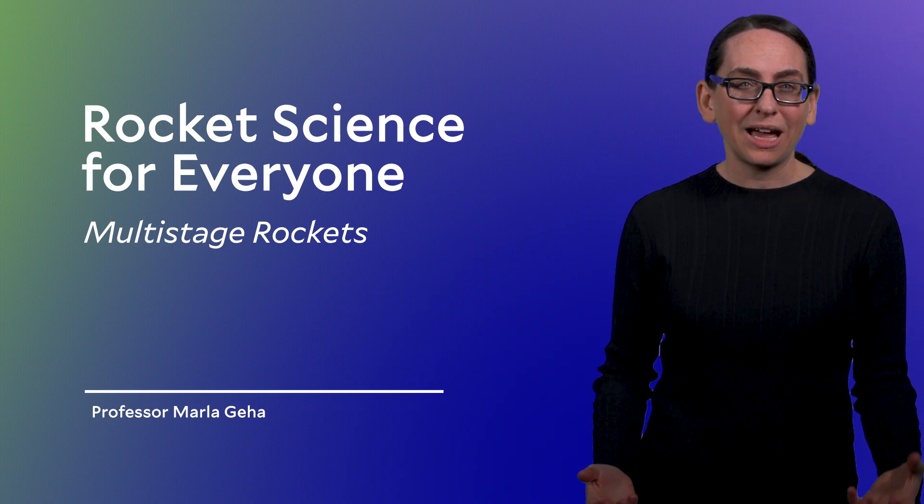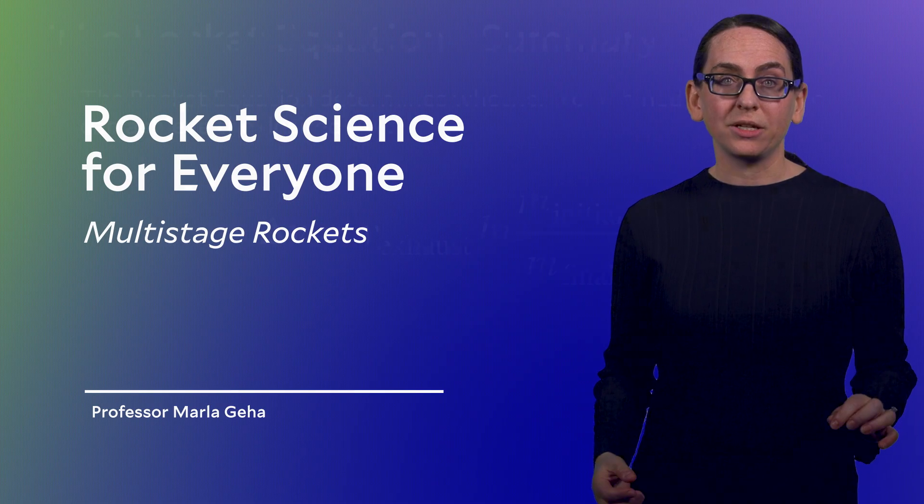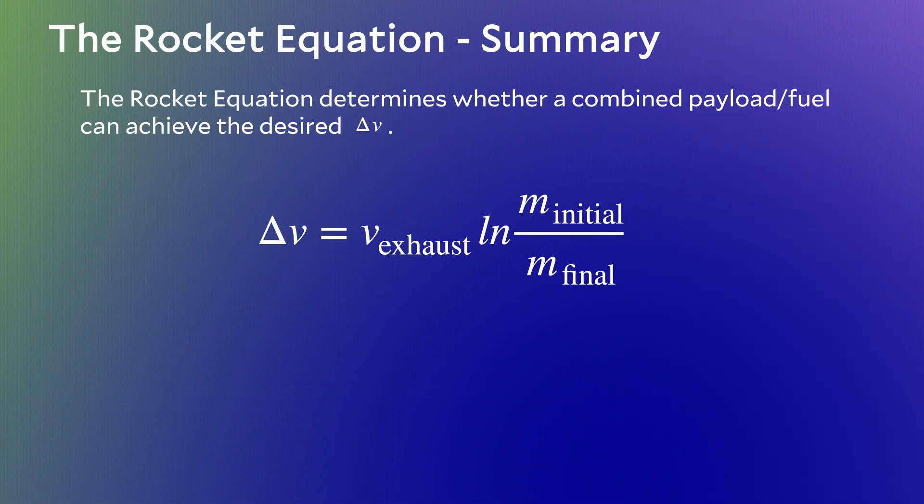Welcome back. In the last segment we talked about the rocket equation. The rocket equation tells us that for a set value of exhaust velocity, determined by your choice of rocket, we have to make trade-offs between the speed we can reach — that delta V — and the amount of payload we can bring. I ended the segment by saying that this equation doesn't give us very much wiggle room, especially when you're launching a satellite from Earth. So looking at this equation, we can consider each term and figure out where we can do a little bit of improvement.